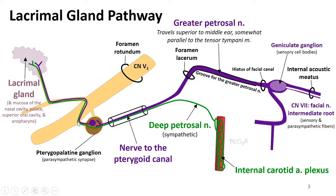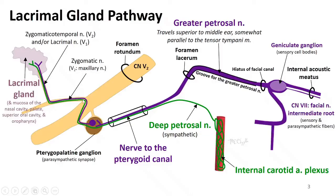We follow these fibers out into V2. There isn't full consensus on exactly how the fibers travel from V2 to reach the lacrimal gland, but one hypothesis is that they follow the zygomatic nerve, a branch of V2, then the zygomaticotemporal nerve, which is a branch of the zygomatic nerve, and may then jump onto a branch of V1 — the lacrimal nerve — to reach the lacrimal gland. Other fibers from this pathway will also supply the mucosa of the nasal cavity, the palate, the superior oral cavity, and the oropharynx.